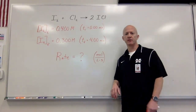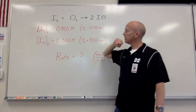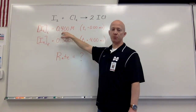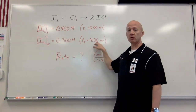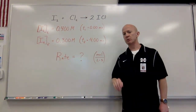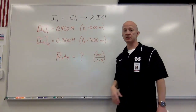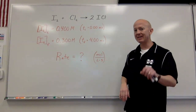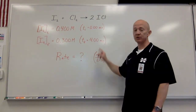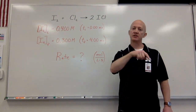Here's your problem for the day. We have a reaction in which iodine and chlorine yield iodine chloride. At the beginning of the reaction, iodine had a concentration of 0.4 molar. After four minutes, iodine had a concentration of 0.3 molar. Calculate the average reaction rate based on these concentrations, and express it in moles per liter per second — not moles per liter per minute. You can take a photo of your work and attach it to the LMS.